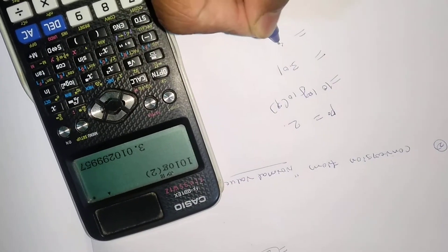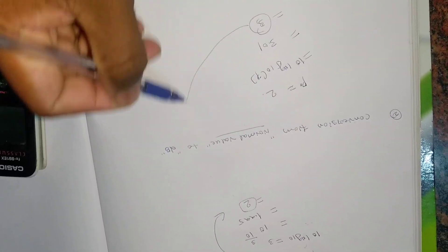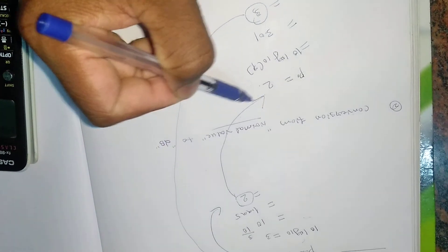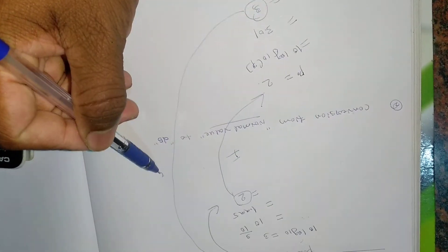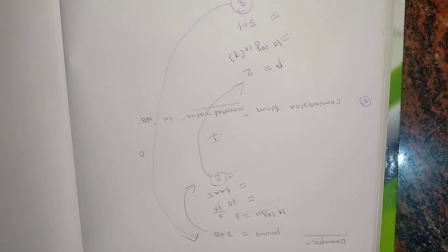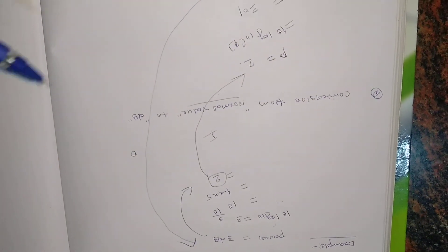So I am getting 3.01 which is equal to 3, and you can see I am getting back the same result. So this is input and this is output. From these two examples we will come to know how to convert from dB scale to normal scale and how to convert from normal scale to dB scale.